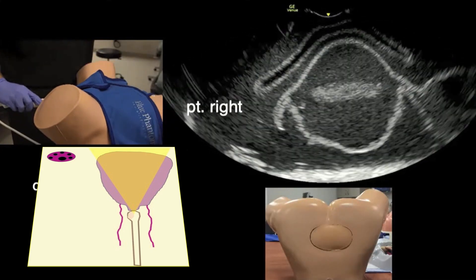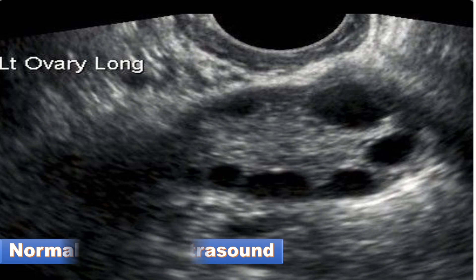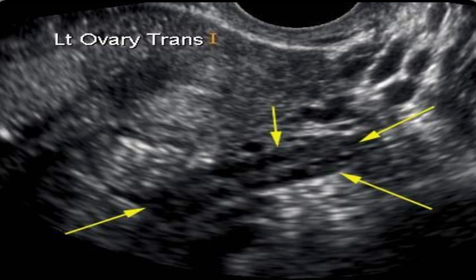Here you can see an ultrasound of a normal transvaginal ovary with normal peripheral follicles. Note that the ultrasound of the uterus may be oblique and can appear to squash the ovary, giving it a flattened, wide shape.